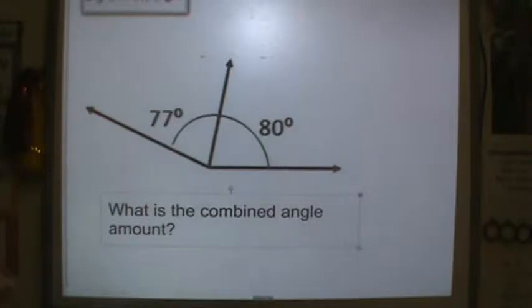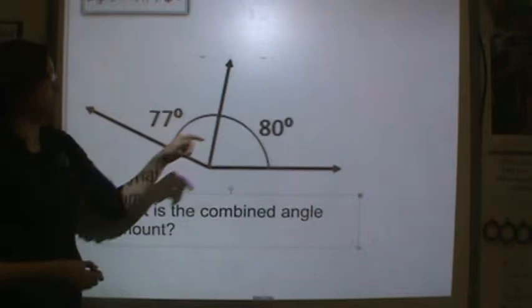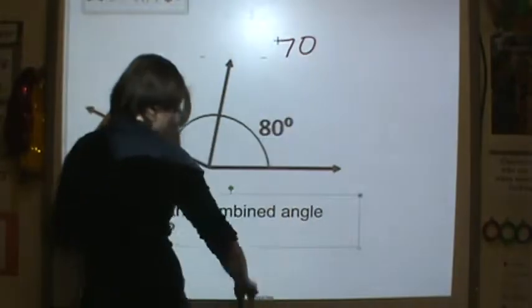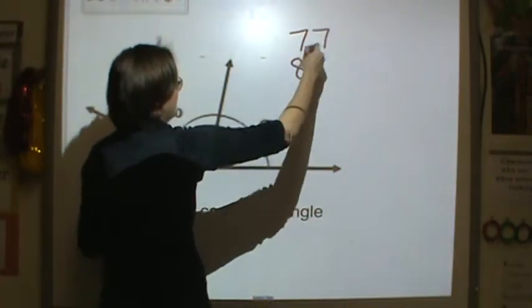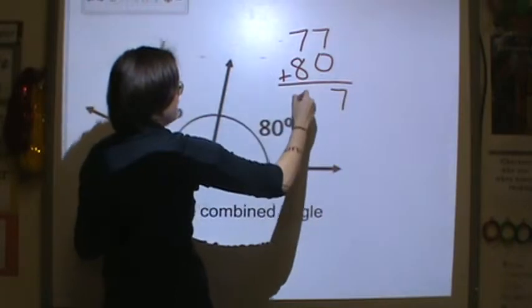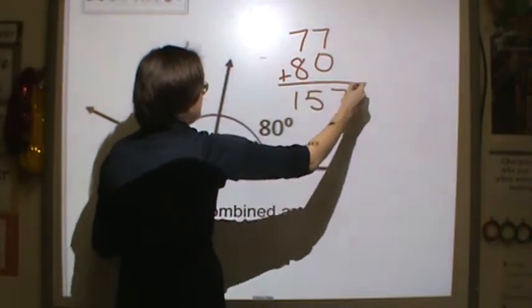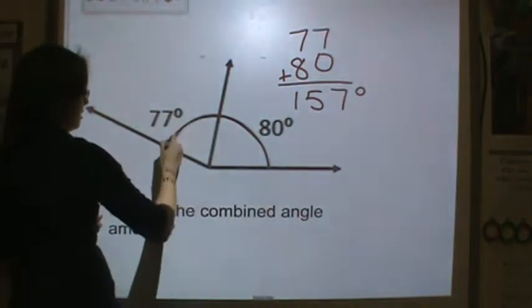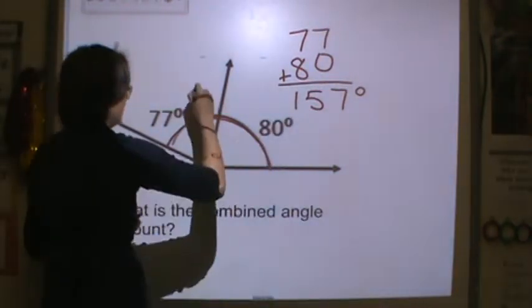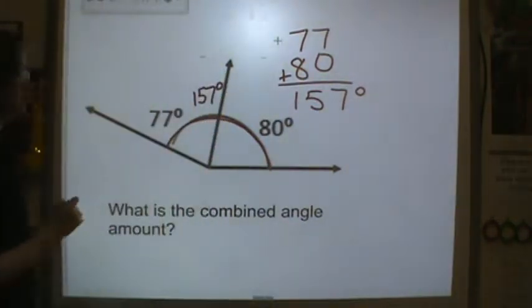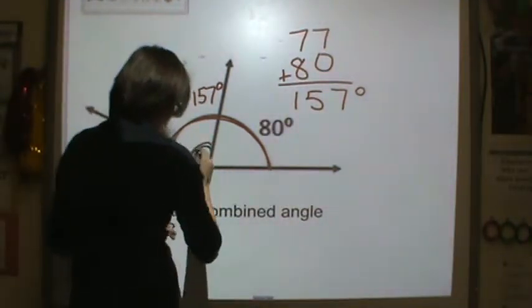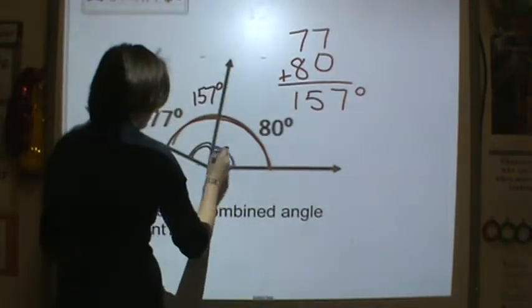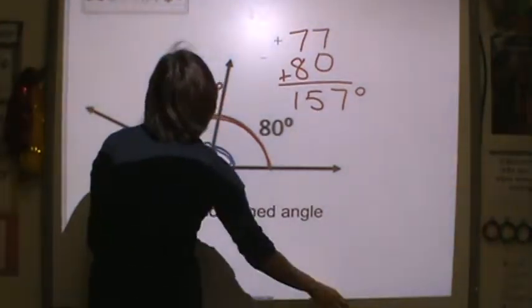So here, if I wanted to compose or combine this angle, all I do is I would take the two degree measurements. Oh, that's 77, not 70. Sorry, guys. 77 and 80 degrees. So total, this angle measurement would be 157 degrees. So this right here is 157 degrees. You're just adding these two angles. So you've got an angle here and you've got an angle here. You're putting them together to get a combined measurement.